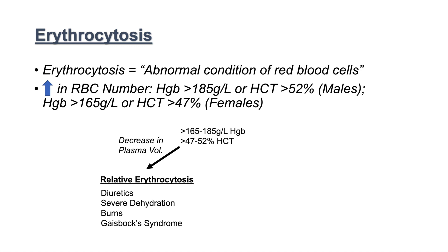If there is no decrease in plasma volume and plasma volume is normal, this is considered absolute erythrocytosis. The first step is to distinguish whether it is relative erythrocytosis or absolute erythrocytosis, and once we determine it is absolute, we can explore the causes.